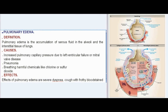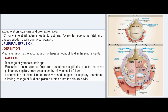Pulmonary edema is the accumulation of serous fluid in the alveoli and interstitial tissue of lungs. Causes include increased pulmonary capillary pressure due to left ventricular failure or mitral valve disease, pneumonia, and breathing harmful chemicals like chlorine or sulfur dioxide. Effects include severe dyspnea, cough with frothy blood-stained expectoration, cyanosis, and cold extremities. Chronic interstitial edema leads to asthma. Alveolar edema is fatal and causes sudden death due to suffocation.